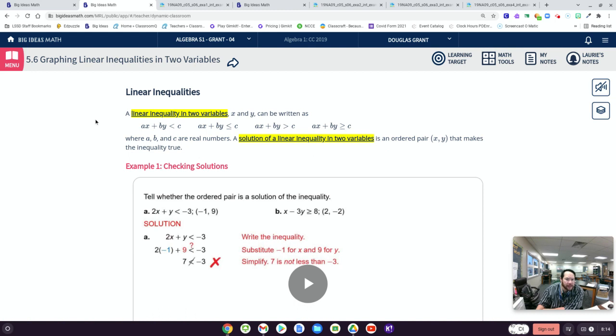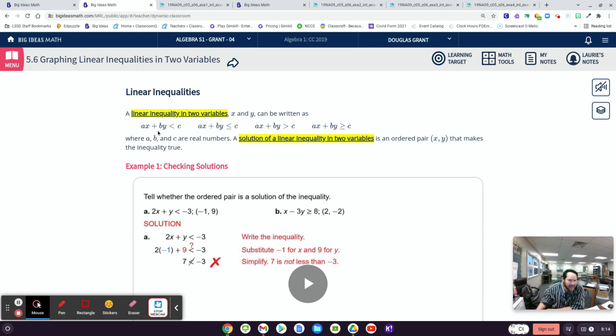So note time. Linear inequality in two variables can be written in standard form normally. So like some coefficient a's and b's times x and y added together will be less than, less than or equal to, greater than, greater than or equal to a third constant.